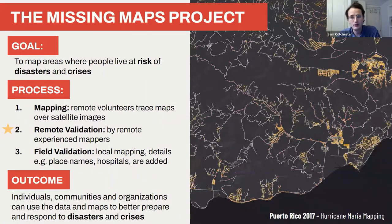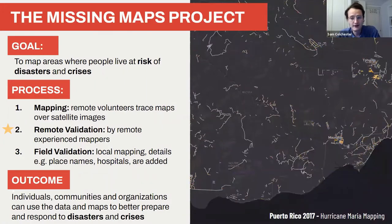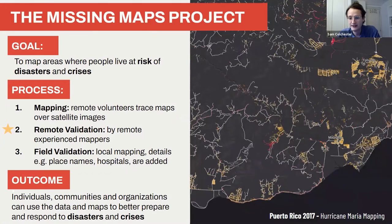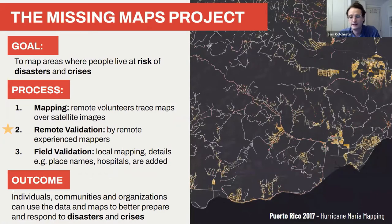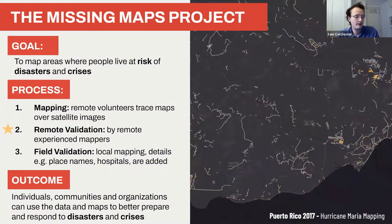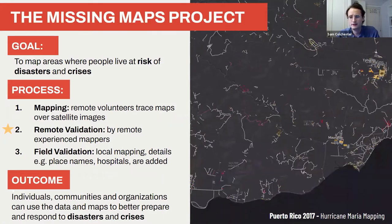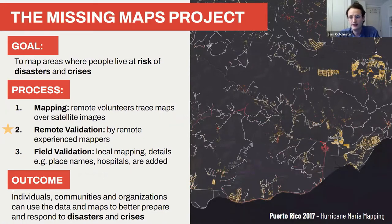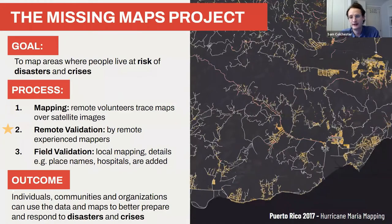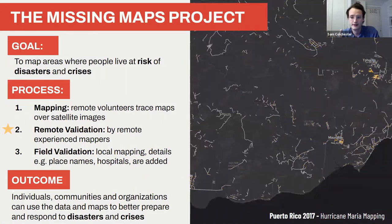Experienced mappers look closely at all the work that's been done, check for errors, fix those errors, and if the mapping was done accurately the validator simply needs to check and approve the work. Finally, these checked maps are taken to the field where local mappers add crucial details like street names, place names, and locations such as healthcare centers.